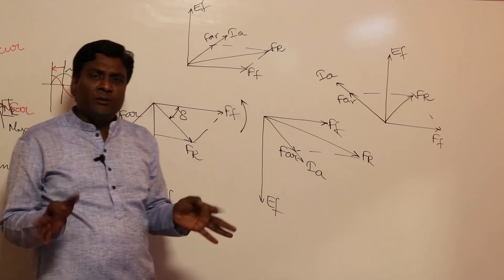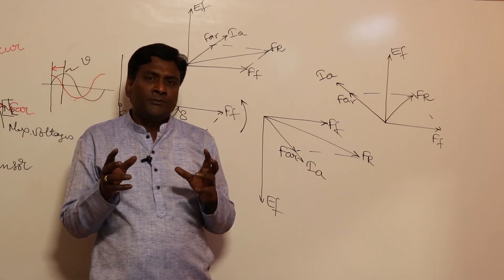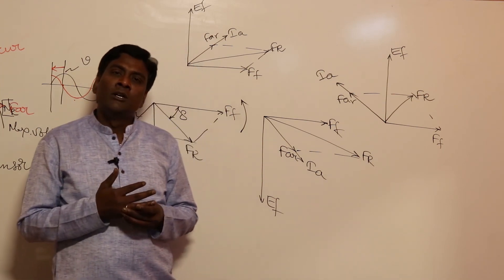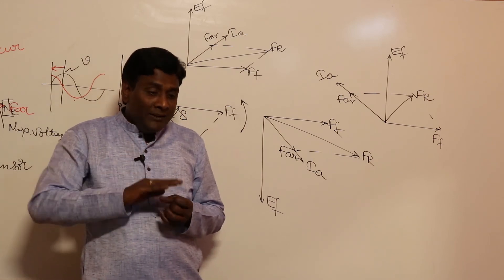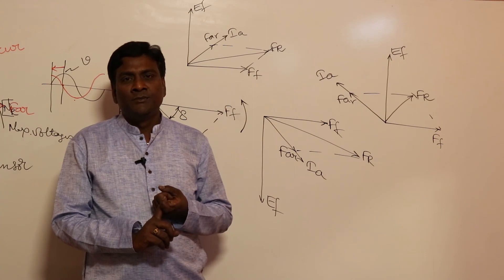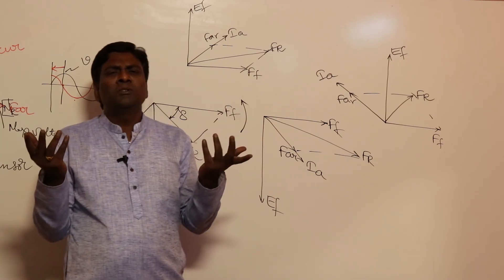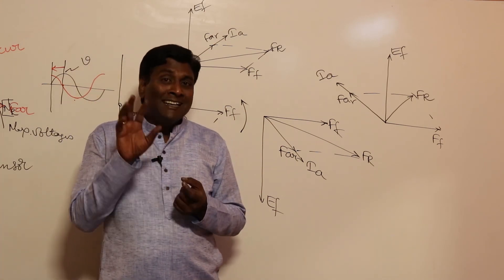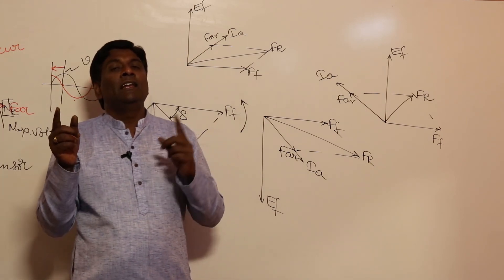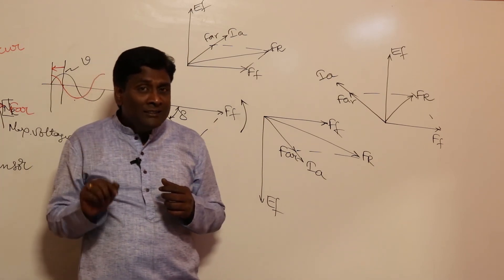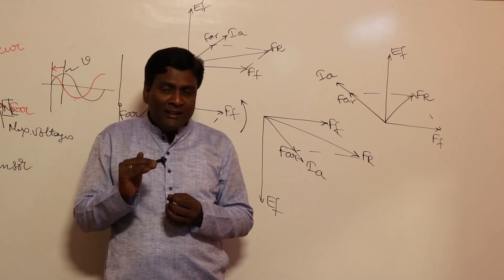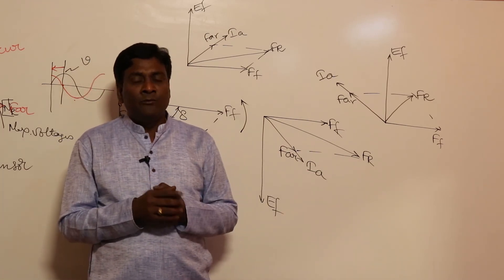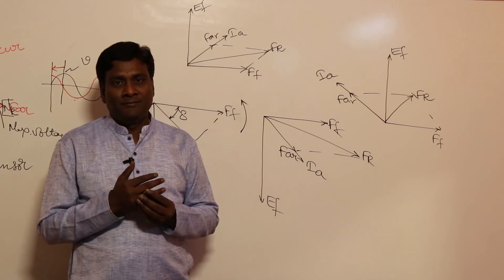Conclusion is very simple. Please repeat the video multiple times if confused, because this is not a physical concept that's easy to visualize. Once we start phasor diagrams and problem solving it will become simple. Final conclusion: synchronous machine when over-excited delivers reactive power with demagnetizing armature reaction effects — increase field current. When under-excited, the synchronous machine absorbs reactive power — reduce field current.